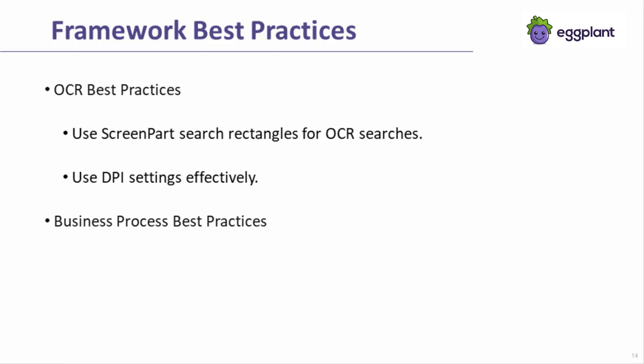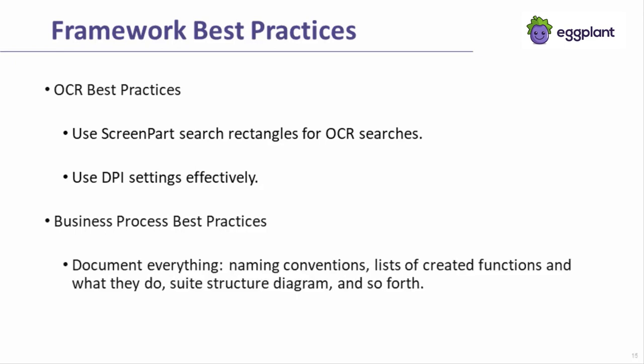The final best practices I'll discuss are business process related and will largely occur outside the context of eggplant functional. Firstly, ensure any components or guidelines relating to your framework are documented and accessible to anyone working on the automation project. Secondly, regularly perform code reviews for any code or images added to the framework. These two recommendations will ensure that people are able to follow the guidelines and that those guidelines are enforced and used consistently.